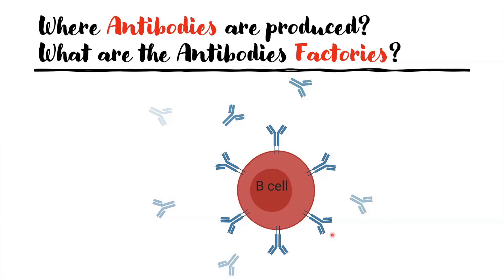Each B cell produces a specific antibody for a specific marker found on a virus, microbe, or cancer cell. For example, the B cell that produces an antibody for the influenza virus is different from the one that produces an antibody for HIV or hepatitis B.